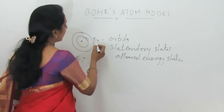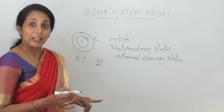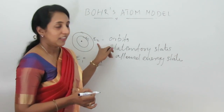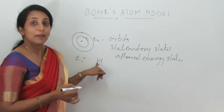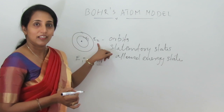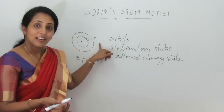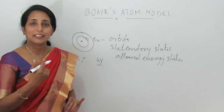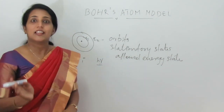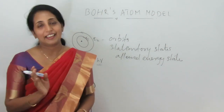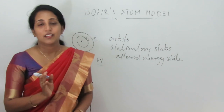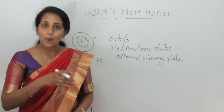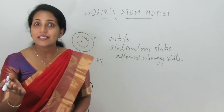When an electron absorbs a quantum of energy, it will jump from energy level E1 to E2. When the electron emits the same amount of energy, it returns to the lower energy level. The energy change takes place only when the electron absorbs energy and goes from a lower energy level to a higher energy level, or when it emits the same amount of energy and returns.